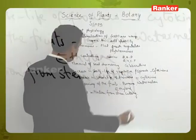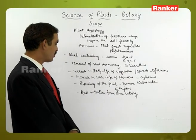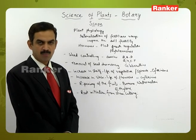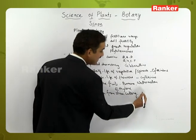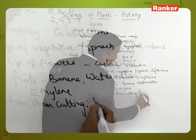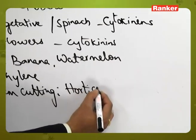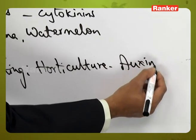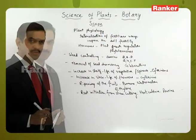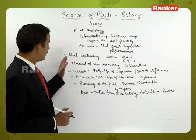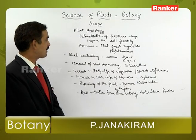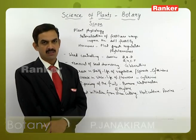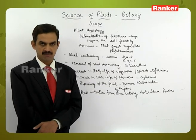Root initiation from stem cuttings — that is, the formation of roots from the cut part of the stem — helps increase the number of plants, which is useful in horticulture. This is carried out by auxins. These are some of the ways plant physiology helps in the development of agricultural crops and agricultural productivity.